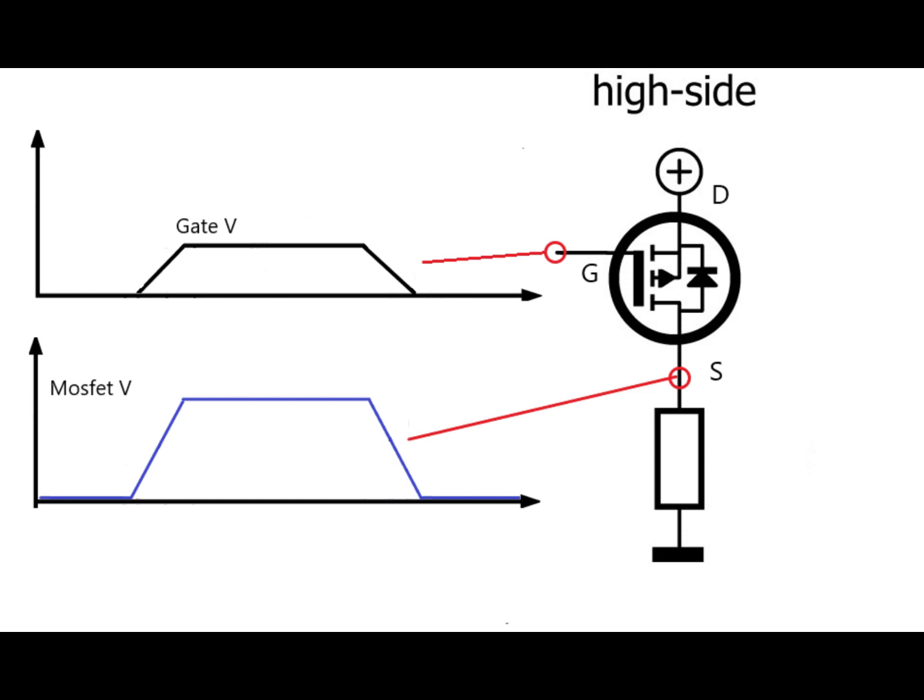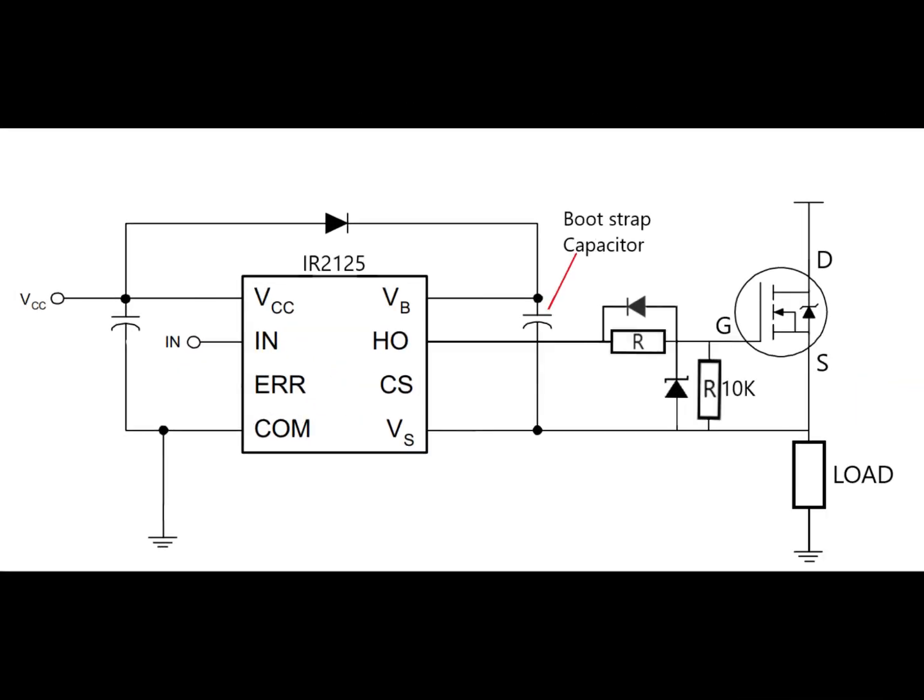Now although there are several methods to deal with this, a common way is to use something called a bootstrap capacitor. If we take for example a common driver to drive high side MOSFETs, the IR2125, then the way the bootstrap capacitor works is that it is charged to the supply voltage of the driver via a diode, but it is referenced to the source of the MOSFET. Then when a small input pulse comes into the driver, the bootstrap capacitor can discharge through the driver into the gate of the MOSFET, turning it on. Note that the bootstrap capacitor must have a capacitance large enough to be able to supply the necessary current to charge the MOSFET gate capacitance.